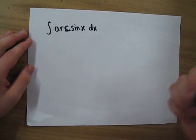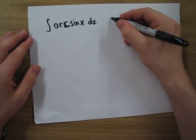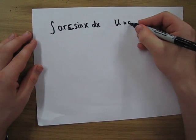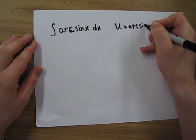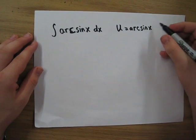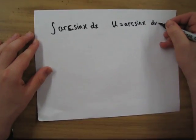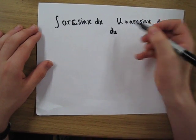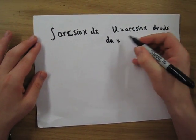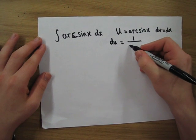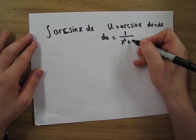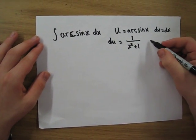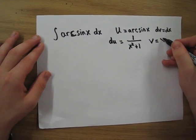We use the same strategy as for natural log of x. We set u equal to arcsine x, which is the inverse sine, and dv equal to dx. Now we have to remember the derivative of arcsine is 1 over x squared plus 1, and v simply equals x.